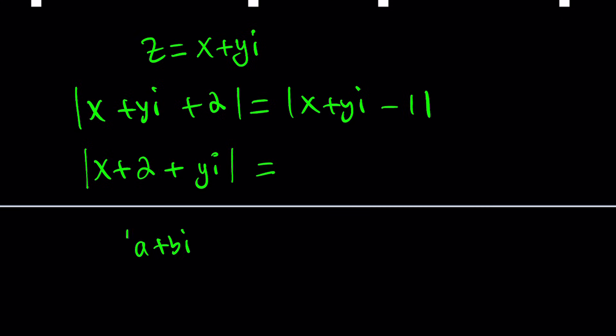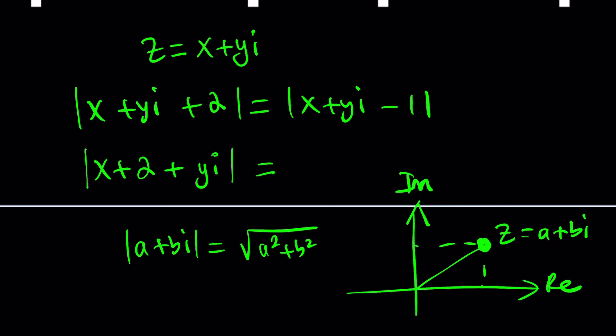Like, for example, how do you find the absolute value of A plus B I? It is the square root of A squared plus B squared. Because when you graph it in the coordinate plane or the Argand plane, you're basically looking at a Z, which can be given as A plus B I or X plus Y I. And there's a real part and an imaginary part. There's an angle, but we're not going to get into that right now. We don't need to.